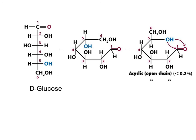In similar fashion, the formation of a stable cyclic structure of glucose is the reaction between the hydroxyl group on carbon number 5 with the carbonyl group, carbon number 1, to form a cyclic hemiacetal.